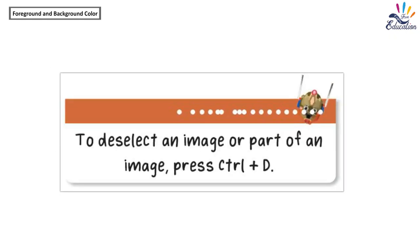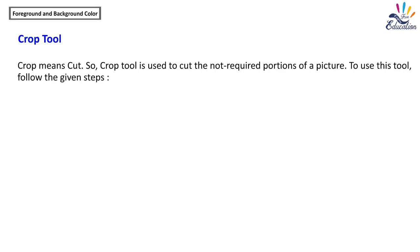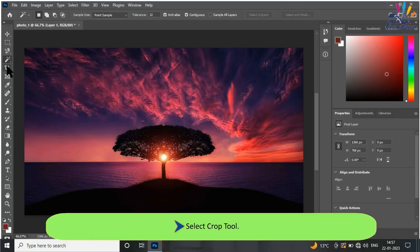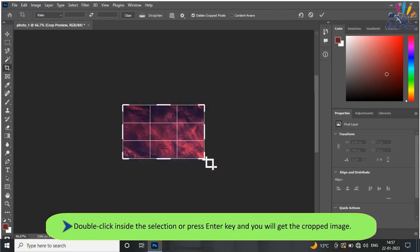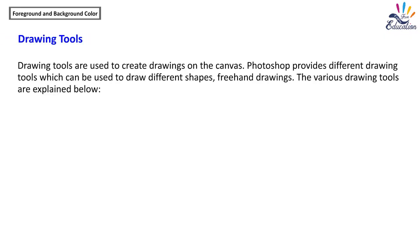Crop means cut. The Crop tool is used to cut the unwanted portions of a picture. To use it, select the Crop tool, click and drag the mouse to select the part of the image you want to keep, then double-click inside the selection or press Enter — you will get the cropped image. To deselect an image or part of an image, press Ctrl + D.